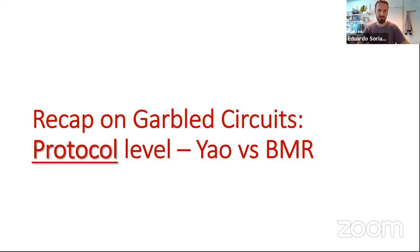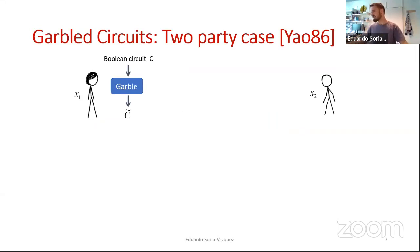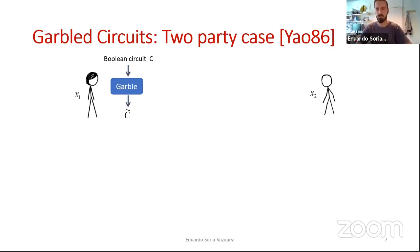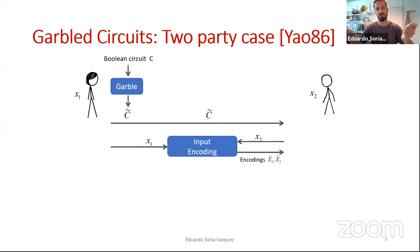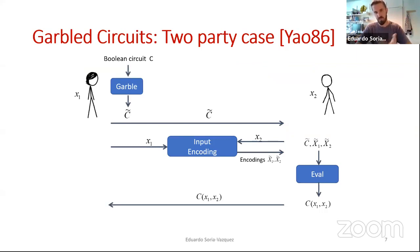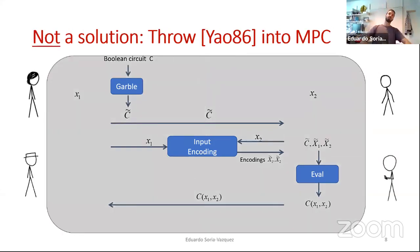A quick recap of garbled circuits. You have two parties, Alice and Bob. Alice garbles the circuit — think of this as some sort of encrypted version of the circuit Alice and Bob want to evaluate. She sends this to Bob, and then Alice and Bob engage in an interactive input encoding protocol that gives Bob some garbled inputs, which he can use to evaluate the garbled circuit and get the result. Once you have this, you send the result back to Alice and everyone gets the output.